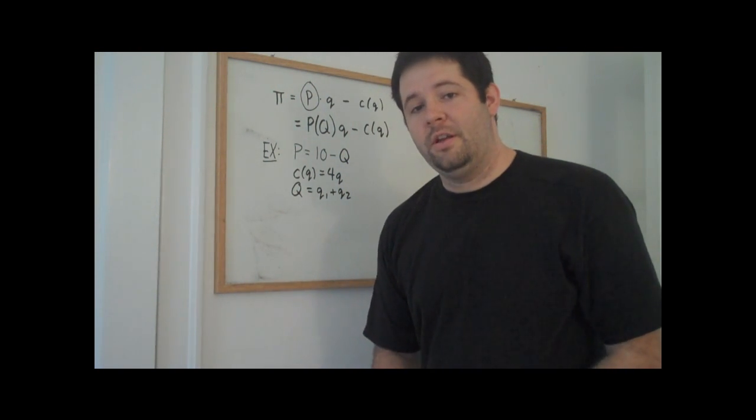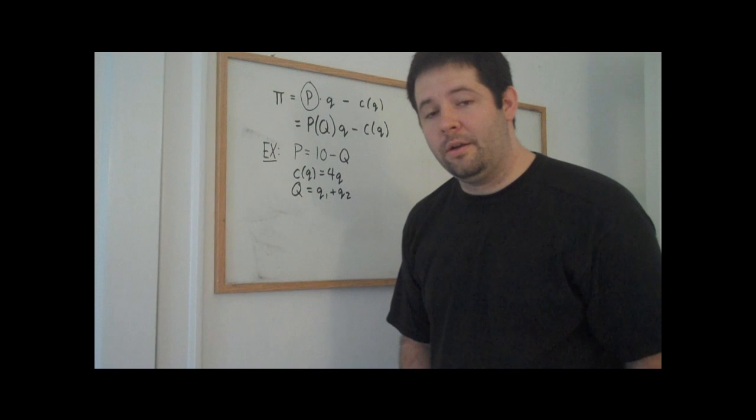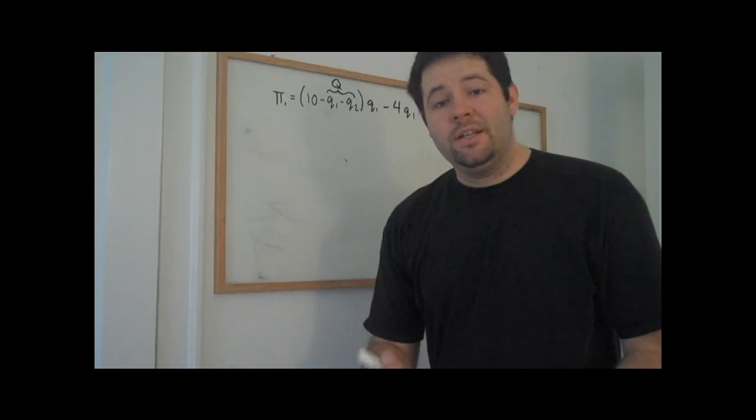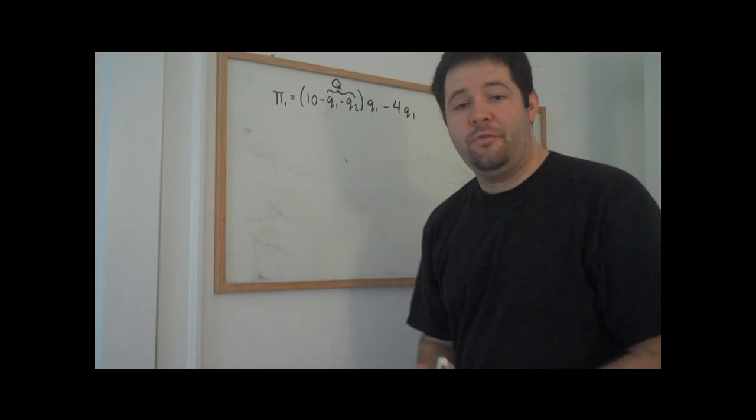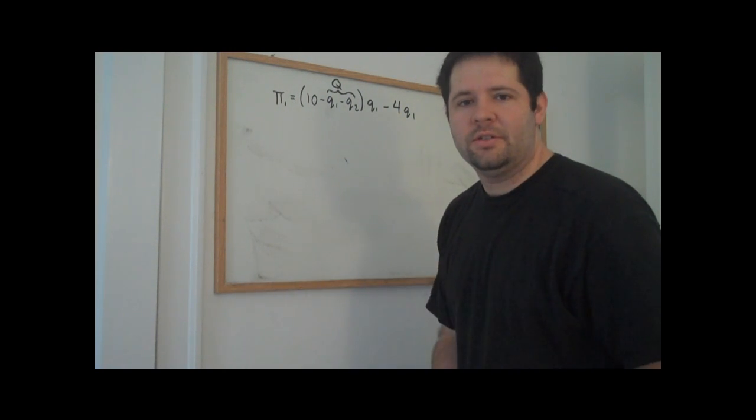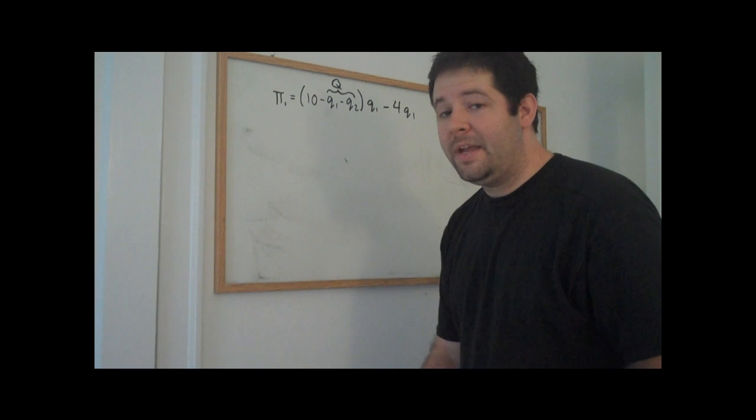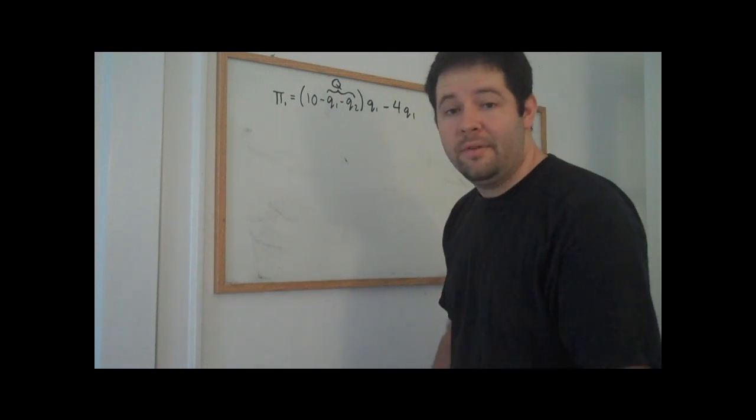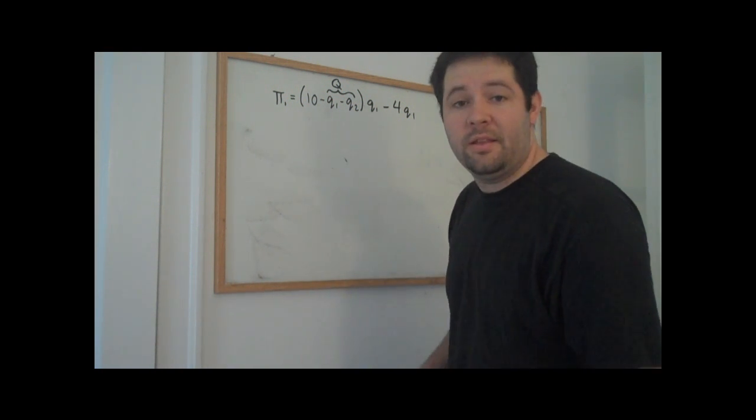What we can do is then just take this example and plug it into this general framework to get the profit function that the Cournot competitor is maximizing. Let's just look at the profit function for firm 1. Firm 1 has a profit function that looks like this.